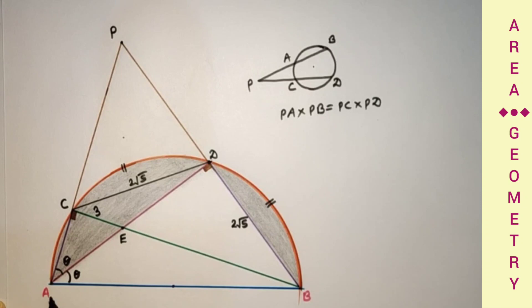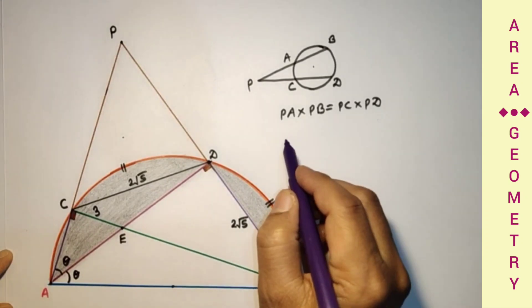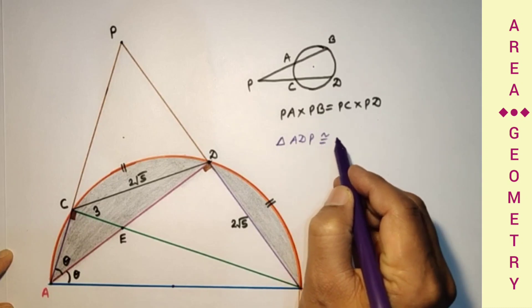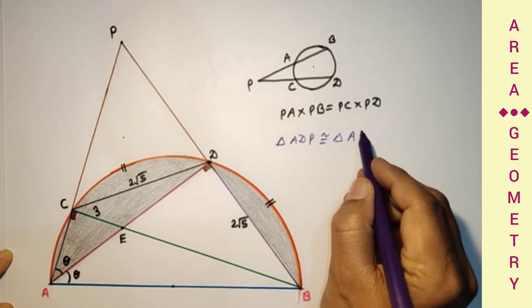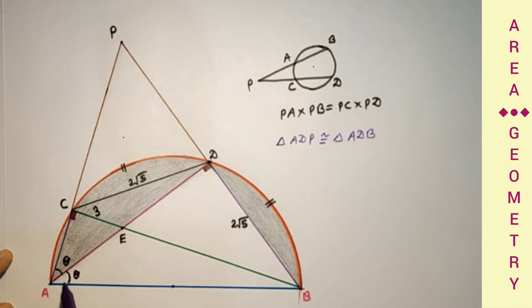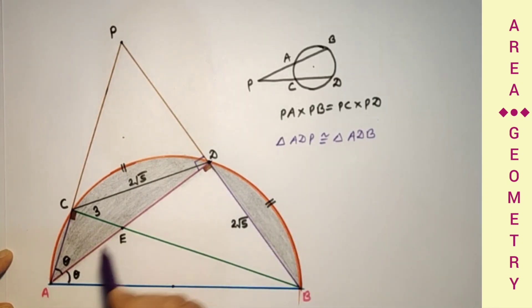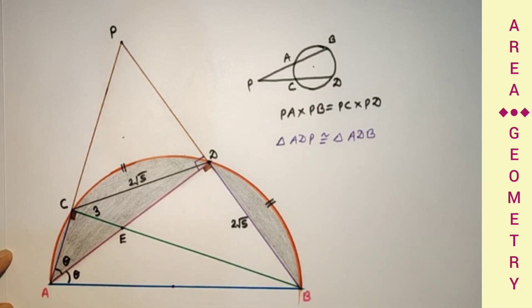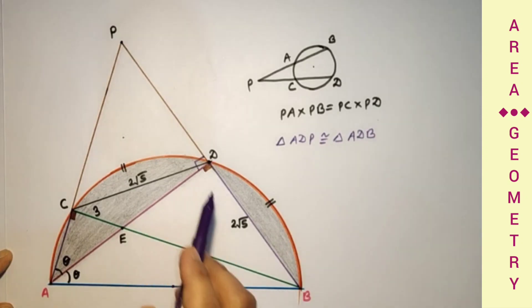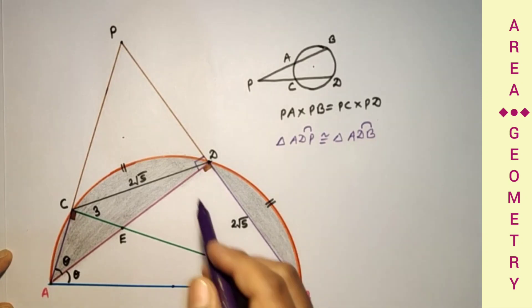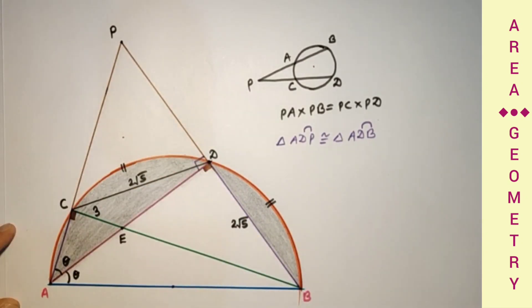Now considering triangles ADP and ADB: triangle ADP is congruent to triangle ADB by the Angle-Side-Angle (ASA) test — both have angle 90°, side AD in common, and angle theta. Therefore BD equals DP, so DP is also 2√5.